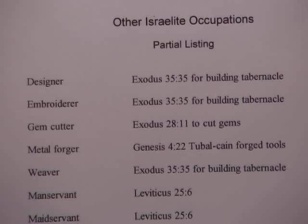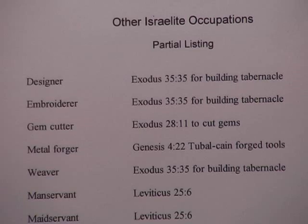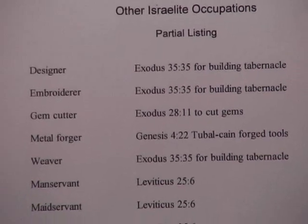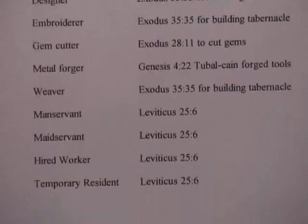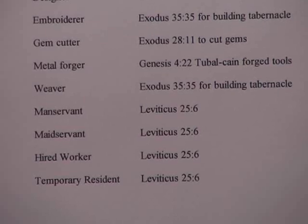The next document I prepared for you is the one titled Other Israelite Occupations. Notice it says 'partial listing' — this is not a complete list of all Israelite occupations at that time. This is just a partial list, and I have a point to make with that. The next chart here has most of the question marks on it.